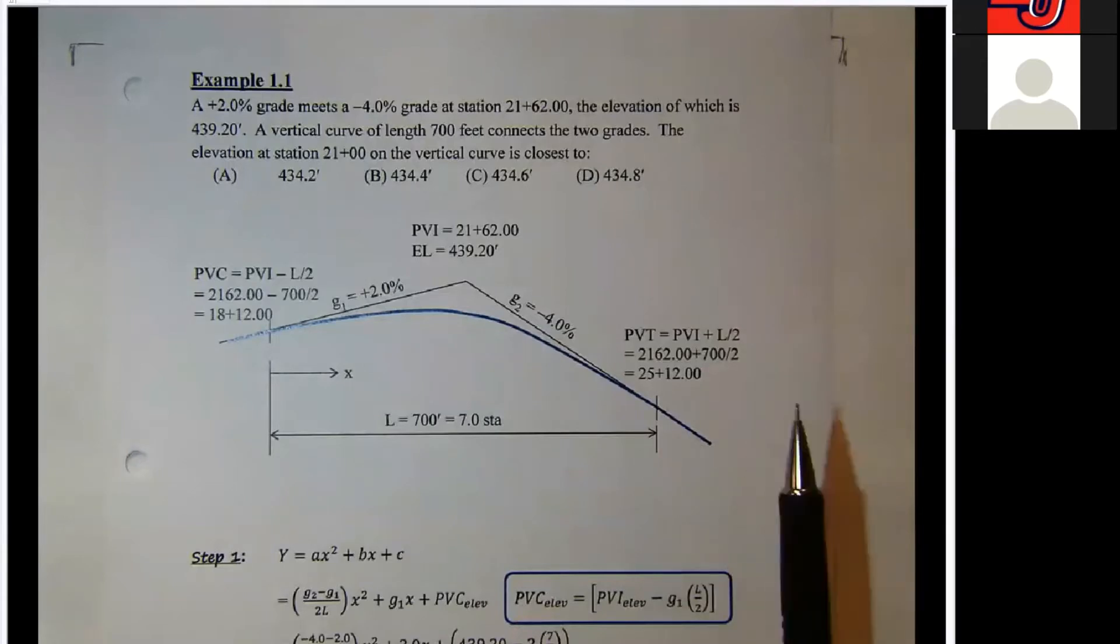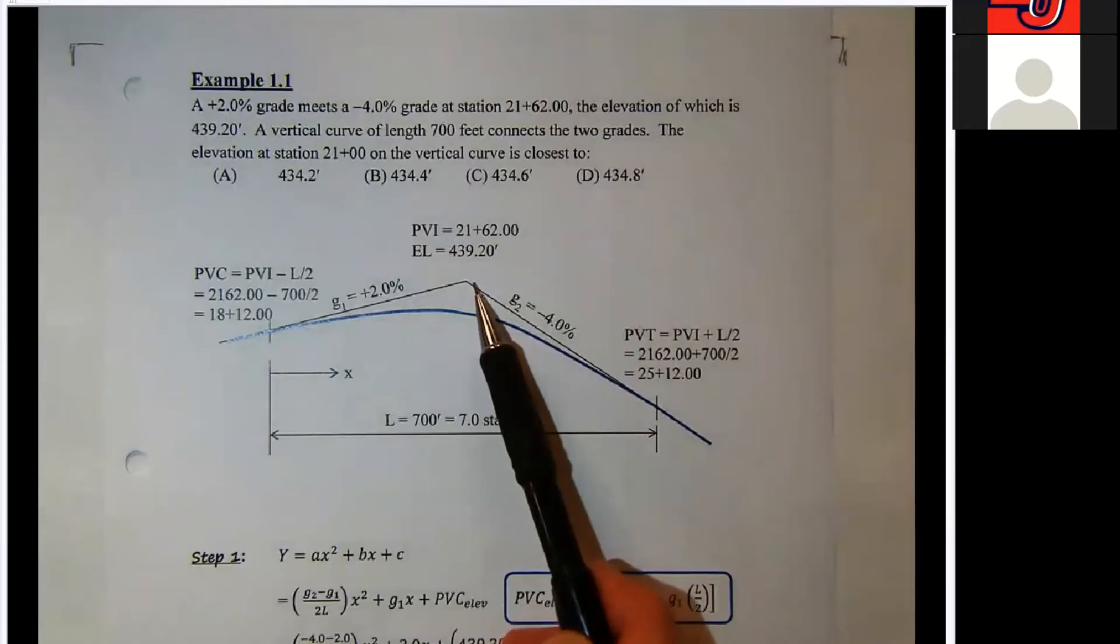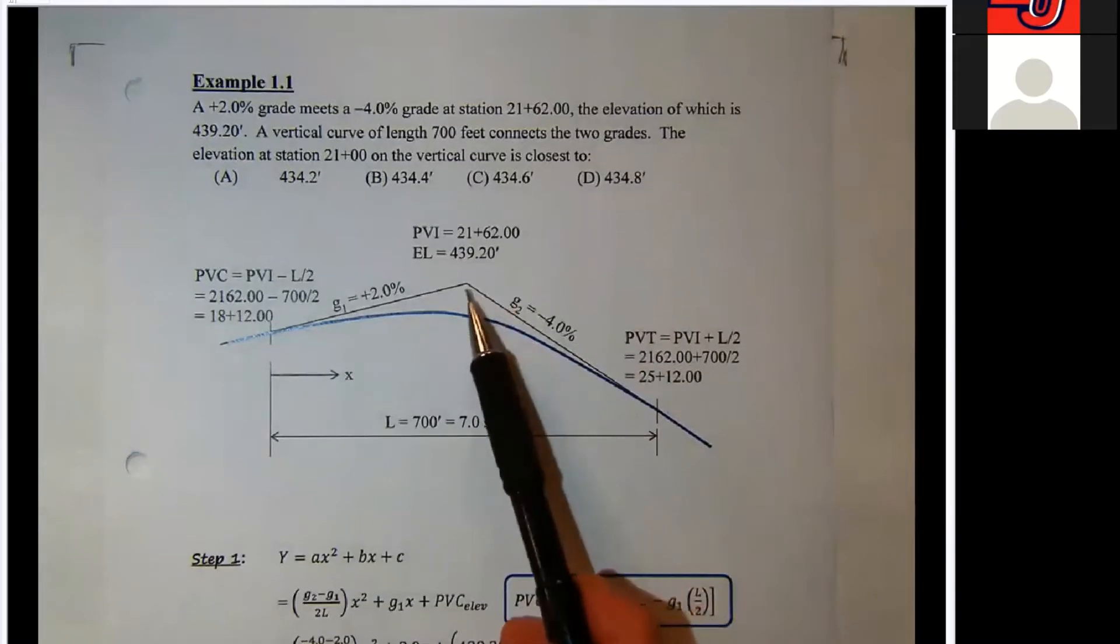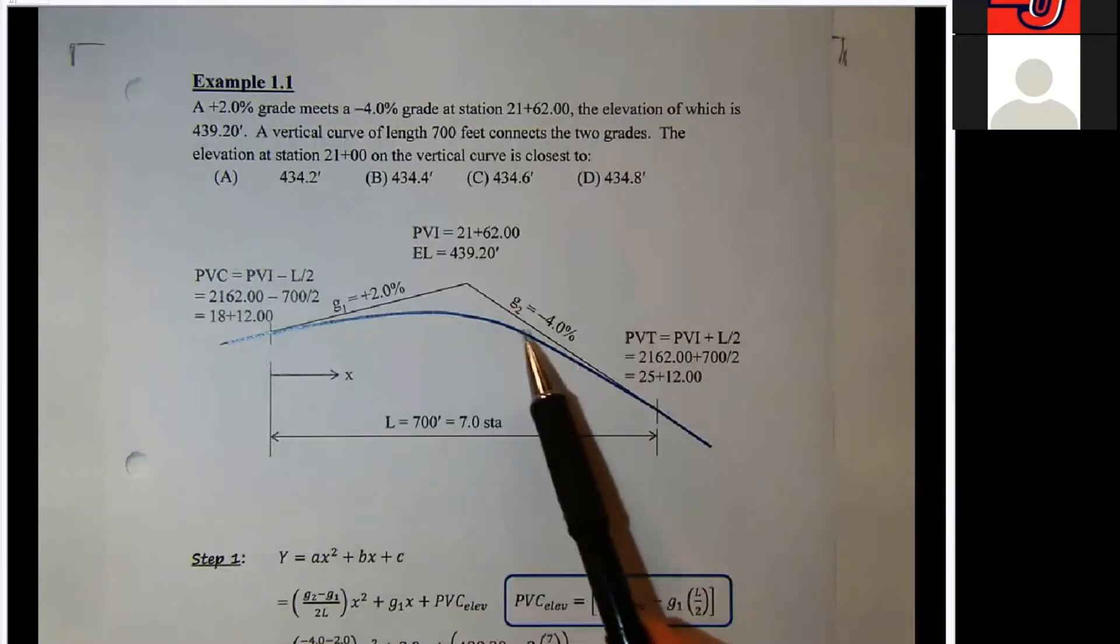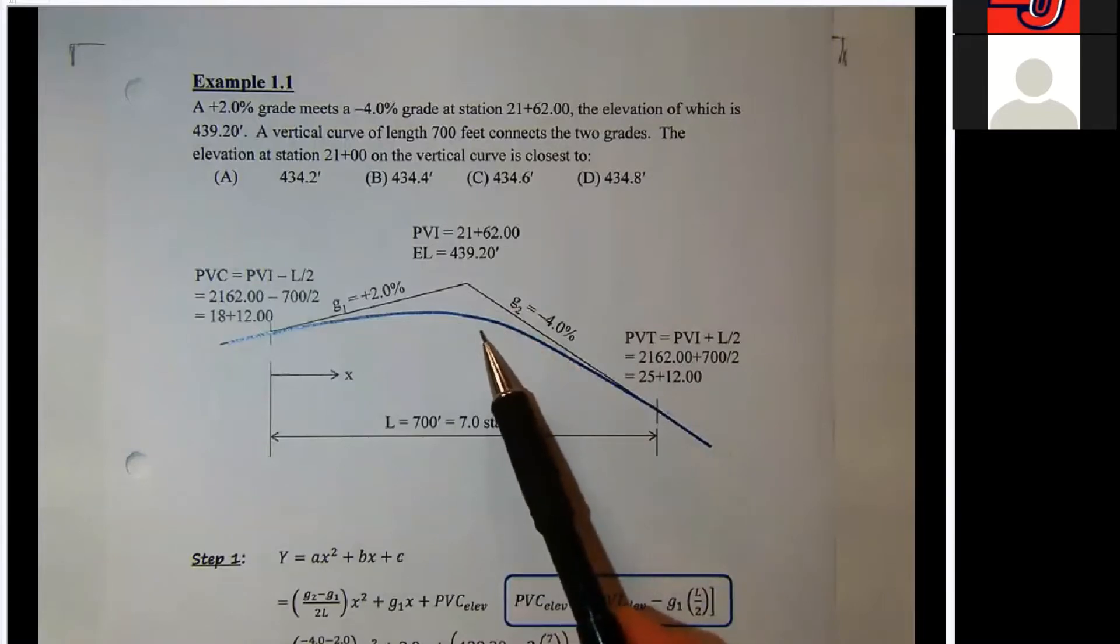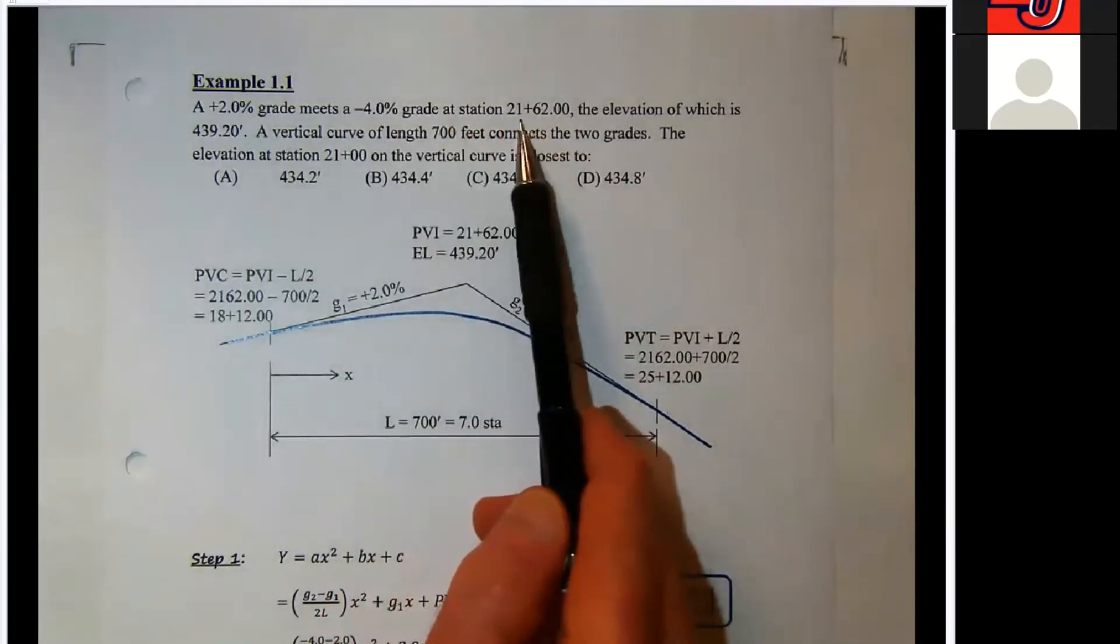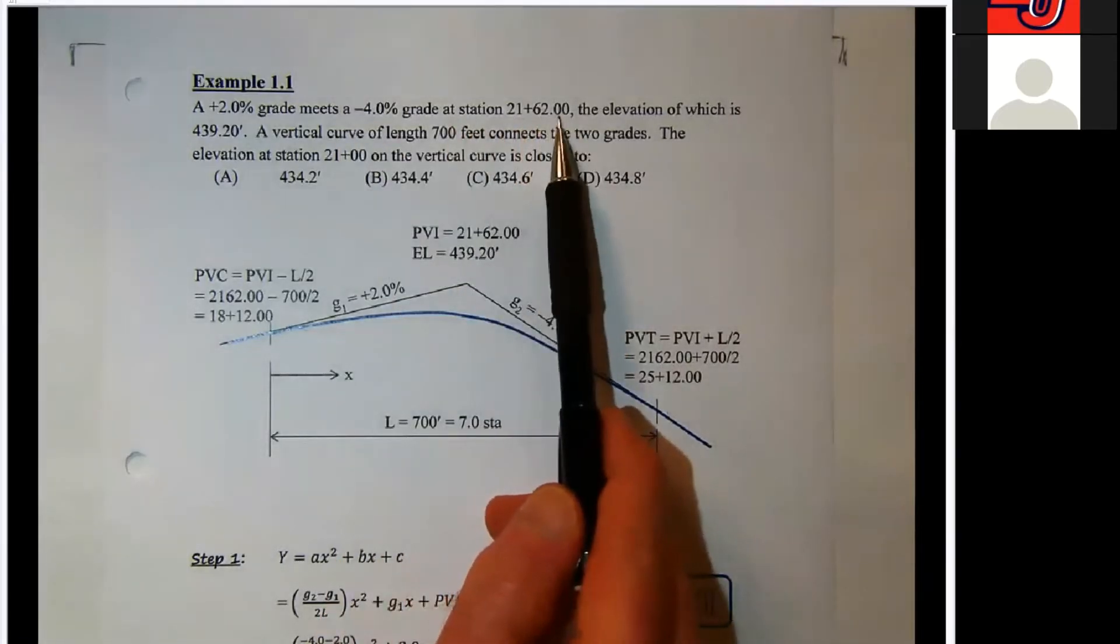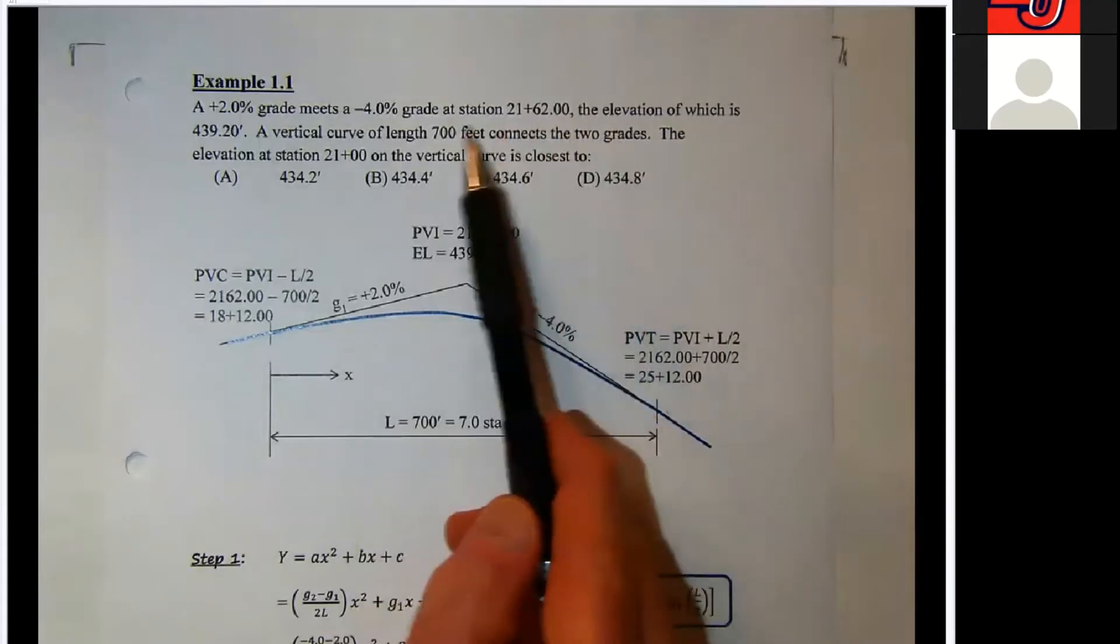I'm a visual person in many ways, and so I'd like to see this to help orient how I'm going to go about solving the problem. So these two grades meet at station 21 plus 62.00, and the elevation is 439.20.